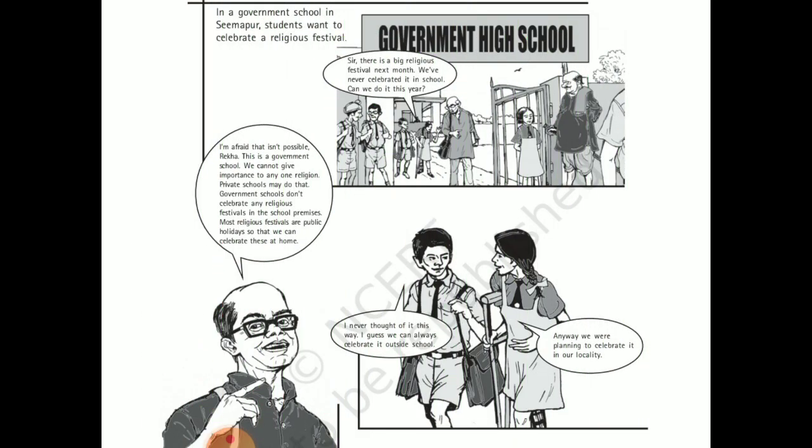As discussed in the last slide of the first part, no religious group rules or runs the state, and all religions are given equal value in a secular state. They never support any special religion in schools, offices, and other places. As shown in this picture, a government school where children want to celebrate a religious festival approach their teacher, but the teacher denies, saying it is a government school and they cannot support or promote a particular religion.